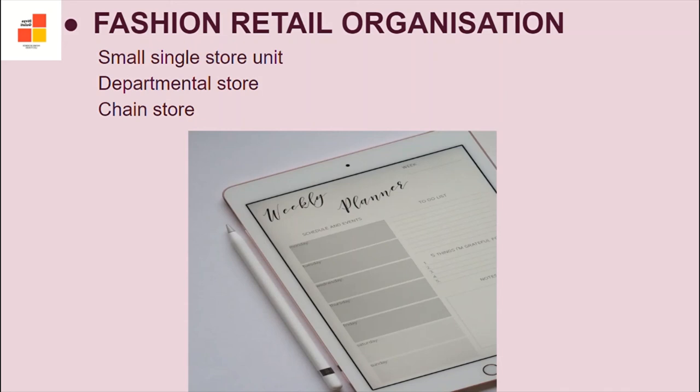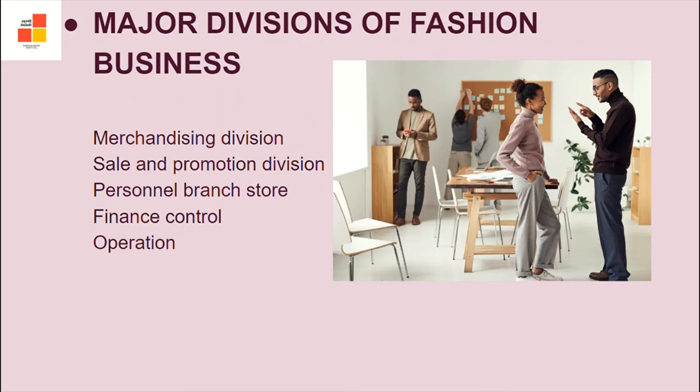The major divisions of the fashion business are: first, the merchandising division — consisting of planning, controlling, and selling of the product; second, sales and promotion — consisting of publicity and public relations; third, the personnel branch and store — for proper functioning of the store; fourth, finance control — consisting of accounts and records; and fifth, the operational division — which covers maintenance of facilities and consumer services.